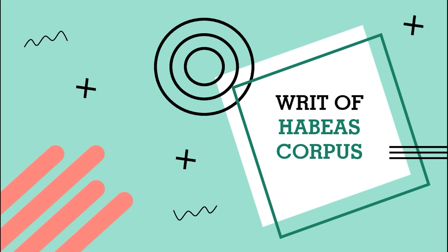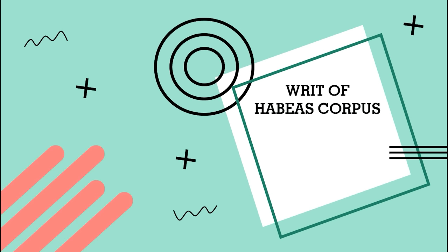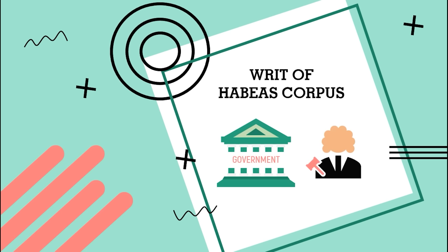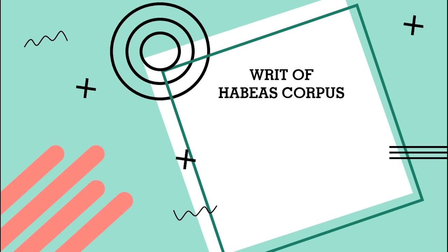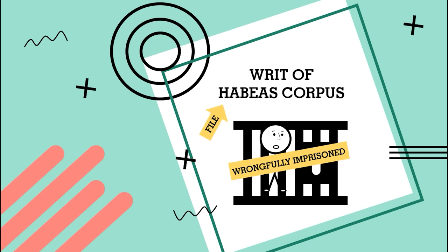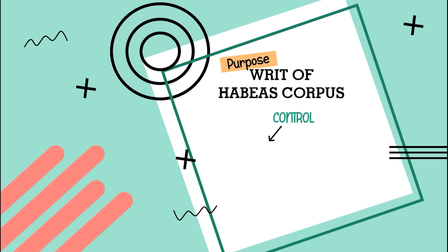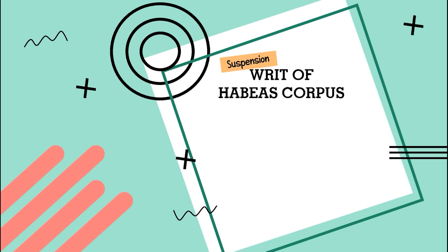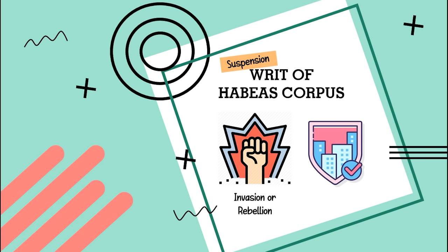Next, the writ of habeas corpus. Habeas corpus is the Latin phrase meaning 'you may have the body,' because the person keeping you in jail literally has to bring your body to the courthouse. Habeas corpus means you have the right to make the government prove to a judge that your arrest and detainment are justified. If you feel wrongfully imprisoned, you can file a writ of habeas corpus — an official request to have your day in court. The purpose is to control governmental entities and prevent abuse of power. However, the privilege of the writ of habeas corpus may be suspended in cases of invasion or rebellion, and when public safety requires it.